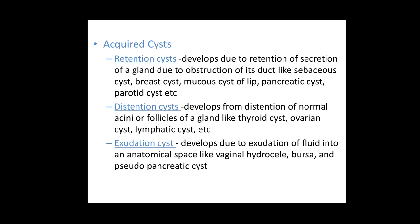The second variety of acquired cysts is distension cysts, which develop from distension of normal acini or follicles of a gland — for example thyroid cyst, ovarian cyst, and lymphatic cyst. When the acini distend due to increased secretions, it results in a cystic swelling. The third variety is exudation cysts, developing due to exudation of fluid into an anatomical space, including vaginal hydrocoele, bursa, and pseudo-pancreatic cyst.